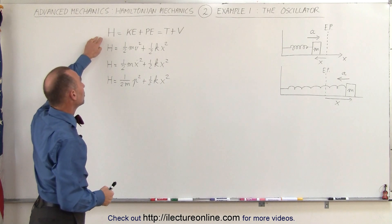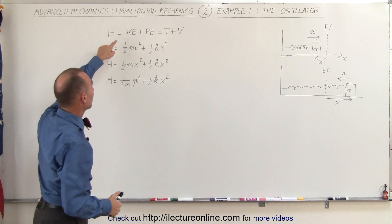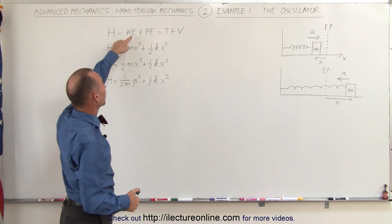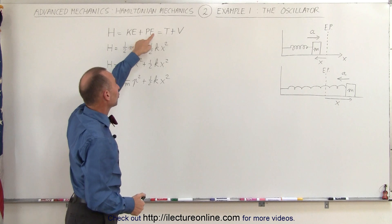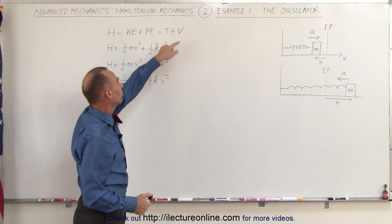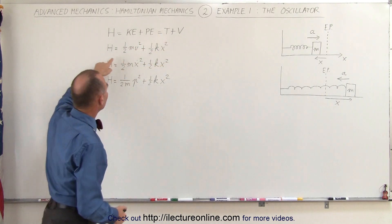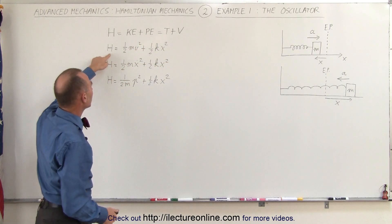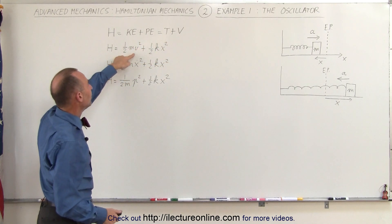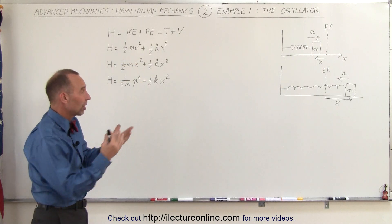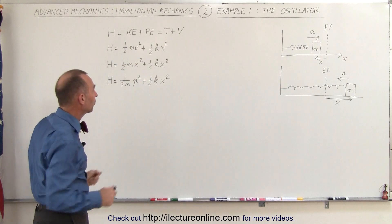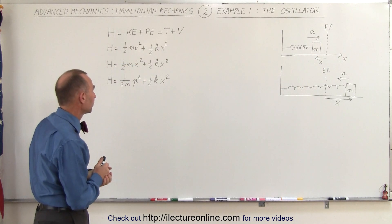Since the Hamiltonian is defined as the sum of the kinetic energy plus the potential energy, also written as T plus V, we can say that the Hamiltonian is ½mv² plus ½kx², the potential energy of the spring.